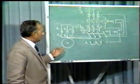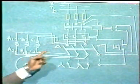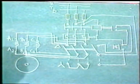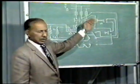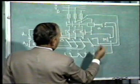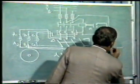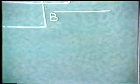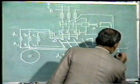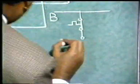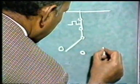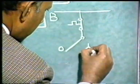For easy understanding, many times only the control circuit is drawn. The control circuit is connected between B phase and Y phase. You have the thermal overload relay contact, and you have the switch with three positions: off position, star position, and delta position.